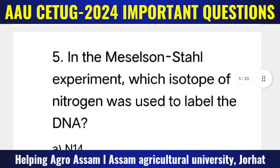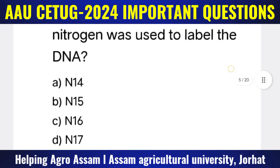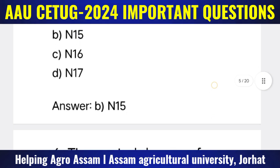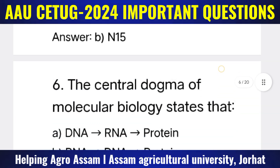Question 5: In the Meselson-Stahl experiment, which isotope of nitrogen was used to label the DNA? Options: (A) N14, (B) N15, (C) N16, (D) N17. The correct answer is option B — N15.